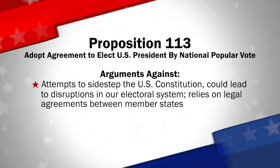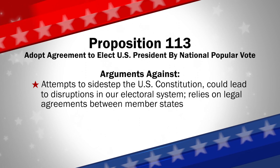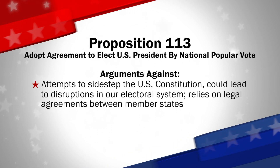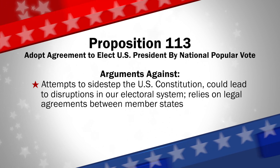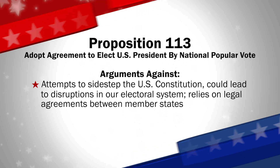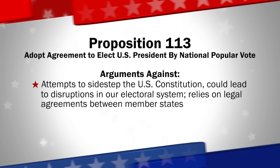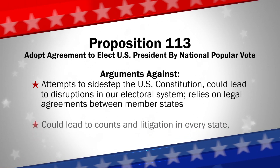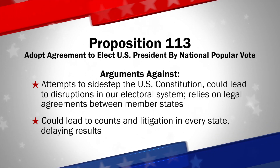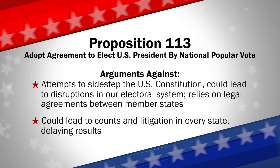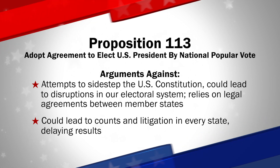Opponents also say this agreement attempts to sidestep the U.S. Constitution and could lead to disruptions in our electoral system. Rather than amend the U.S. Constitution to implement a true national popular vote, the compact relies on legal agreements between member states. States have different election requirements and policies. In addition, a close election run by 50 separate states trying to determine who won the national popular vote could lead to recounts and litigation in every state, delaying results, causing confusion, and eroding confidence in our electoral system.